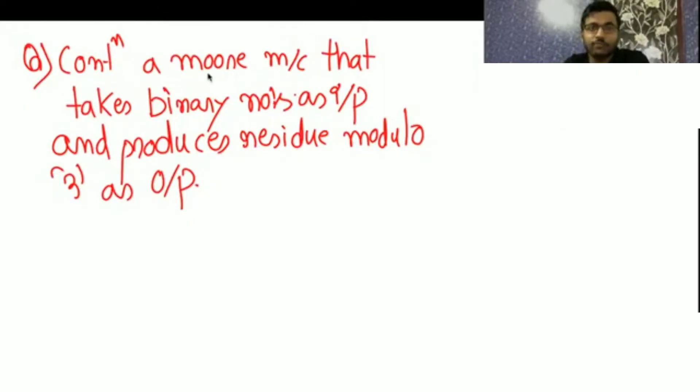Now, you have to make a machine that takes binary numbers as input. And what is the output? Residue modulo 3, meaning you have to divide and find the remainder. This is the output we can create.